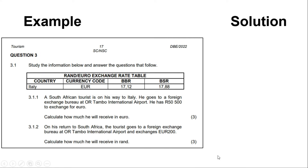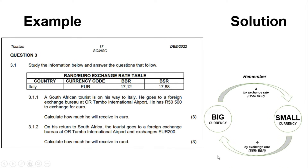Before looking at the solution, remember: moving from a big currency to a small currency, we multiply by the exchange rate; moving from a small currency to a bigger currency, we divide. To determine BBR or BSR, we deduce that from the scenario. For the first question, he is leaving South Africa going to Italy, so we work with the euro. We've identified the two currencies — the South African rand and the euro — and now determine which is big and which is small.